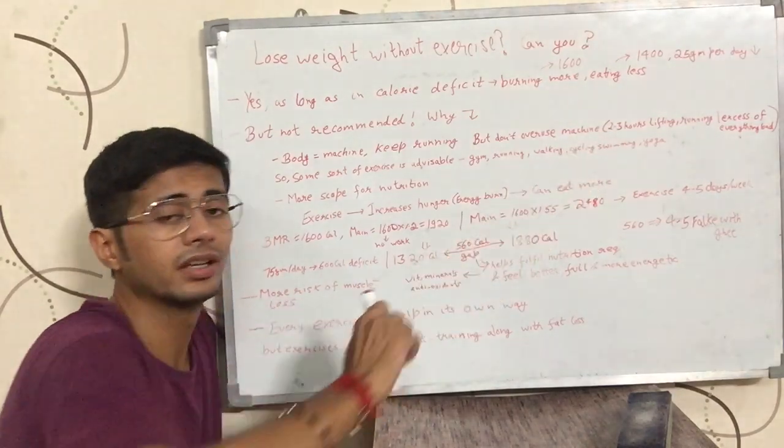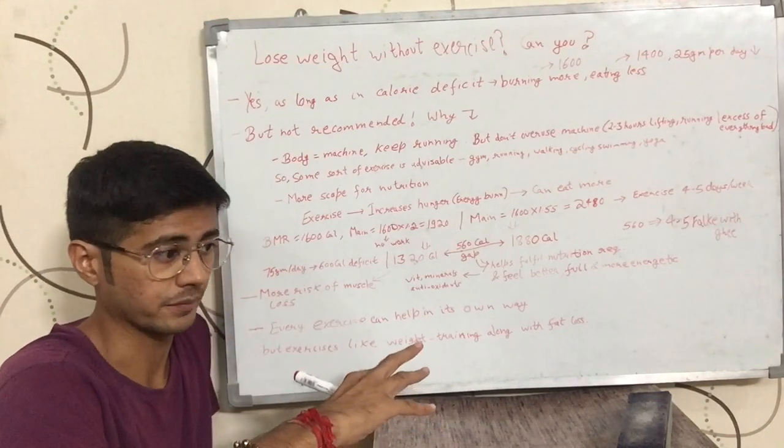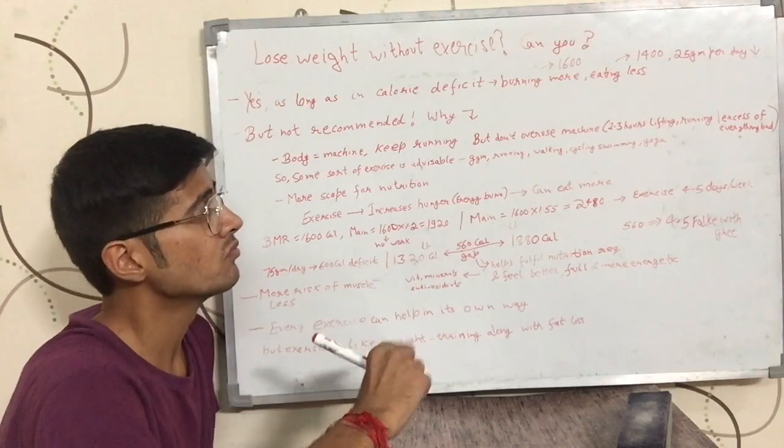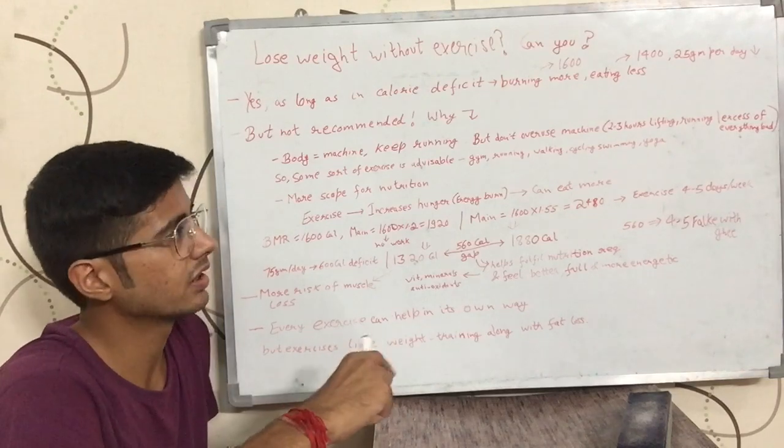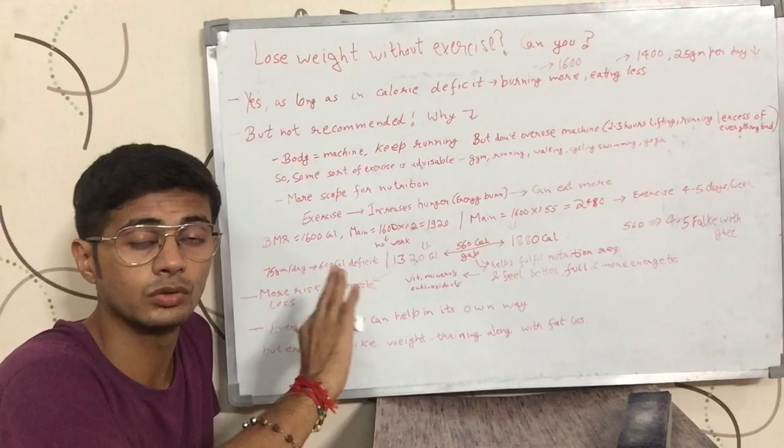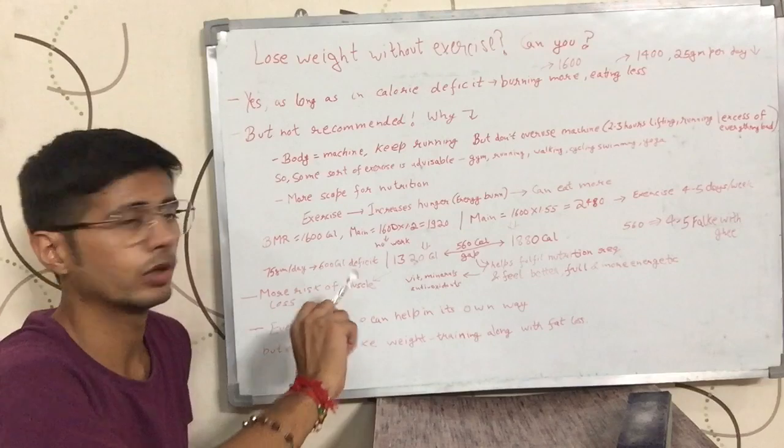So for example, people lift 2-3 hours in the gym thinking that they would lose weight quickly or they will gain a lot of muscle easily. Or they keep running on the treadmill and keep cycling for 2-3 hours. So they do not need to put in that much effort. It can be harmful for their body. Excess of everything is bad.